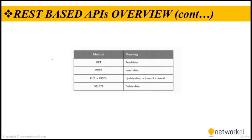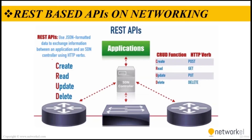A POST request is for writing data to an API — best practice is to put the data in the body of the request. Now let's focus on networking. REST APIs are northbound APIs used to communicate between an application and a network controller. Specifically, these APIs use HTTP verbs to exchange information, typically using JSON format.